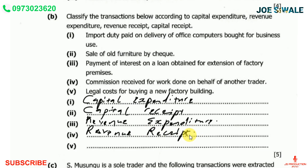Number five reads: legal cost for buying a new factory building. That is going to be capital expenditure.